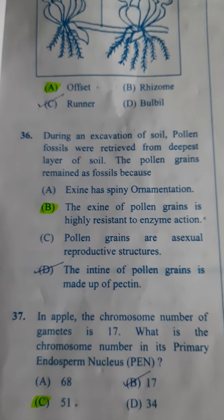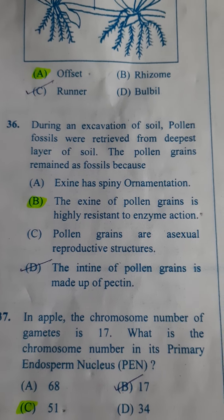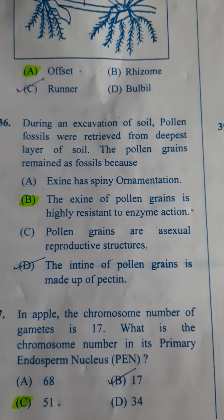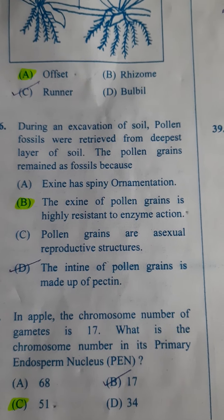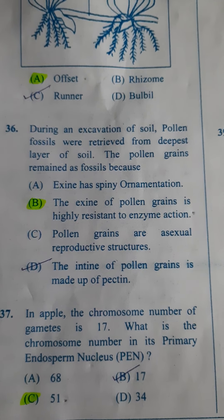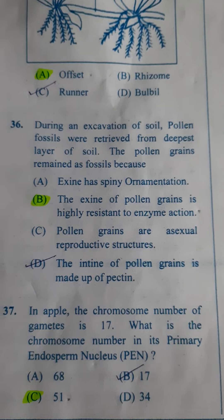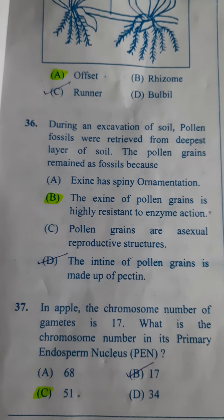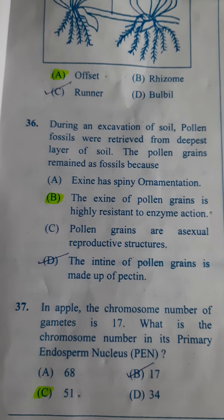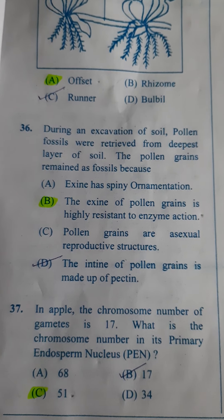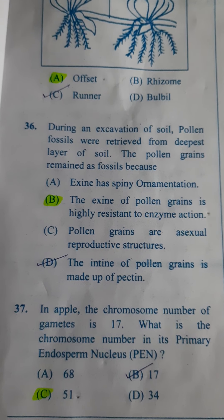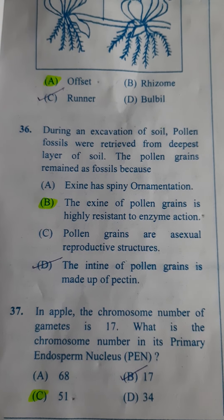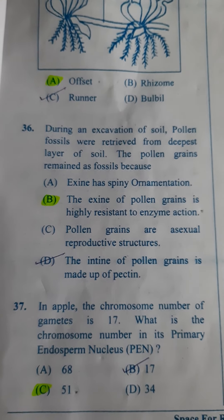Next one: During an excavation of soil, pollen fossils were retrieved from the deepest layer. The pollen grain remained as a fossil because — pollen grains are able to remain as fossils because they have a very hard covering around them which is resistant to temperature and also to alkali. That is nothing but the exine, which is made up of sporopollenin. So the answer is B — exine of the pollen grain is highly resistant to enzyme action.